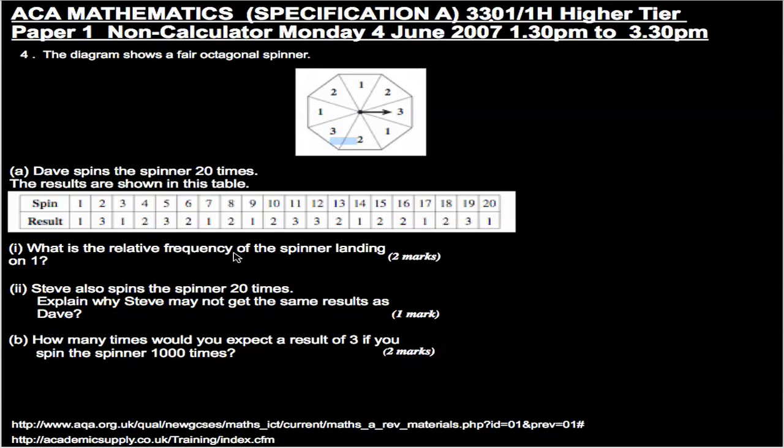Okay, what is the relative frequency of the spinner landing on 1? Well, what is the relative frequency? Well, the relative frequency is the number of times 1 occurs divided by or over the total number of spins.